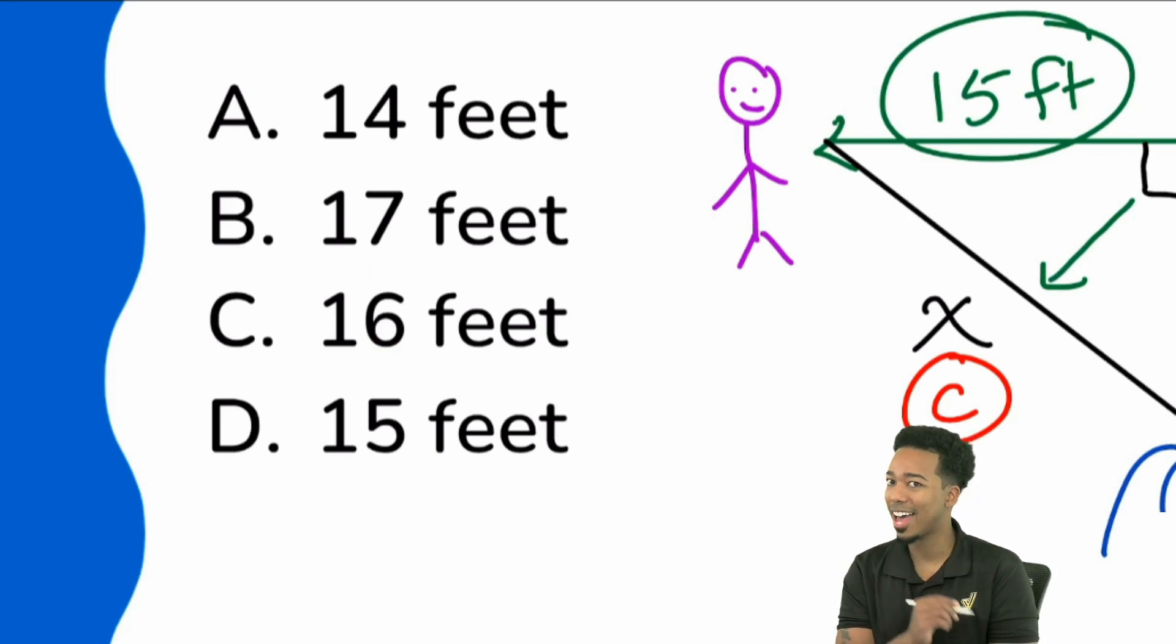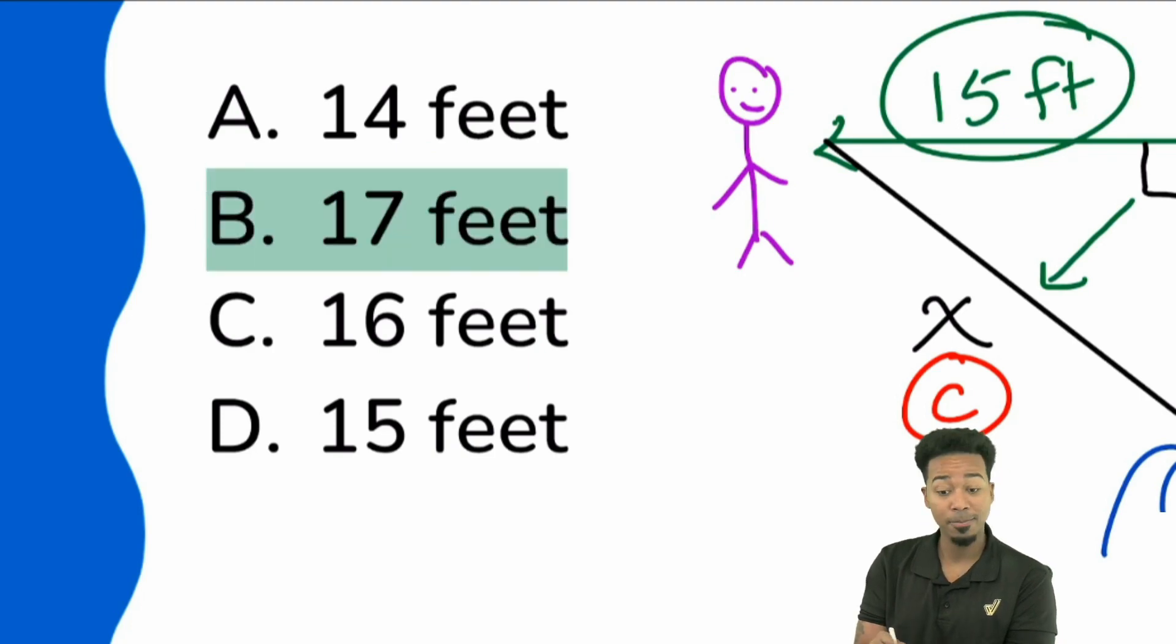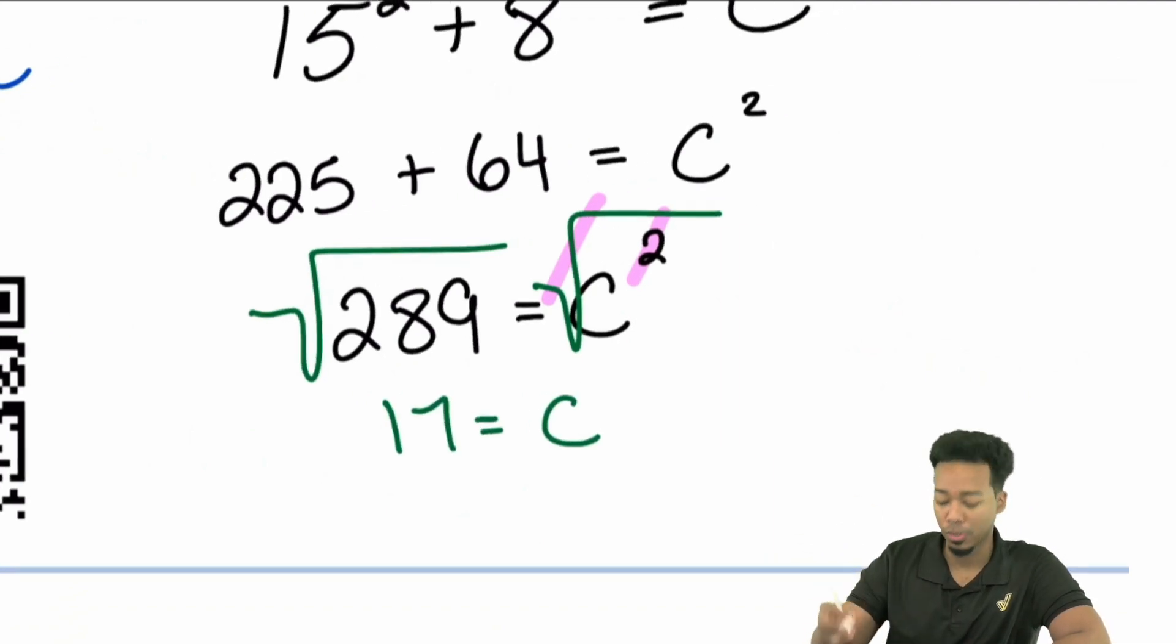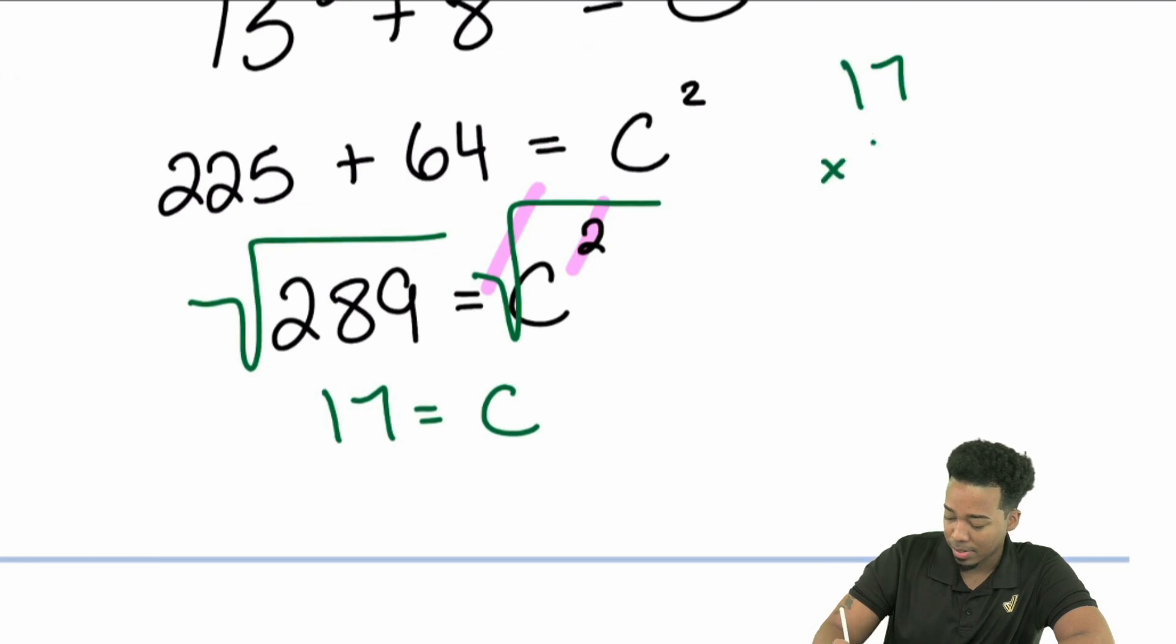What about six times six? That ends in a six, 36. Seven times seven does end in a nine because seven times seven is 49. Because four times four is 16, that ends in a six. So I don't have to actually do the math here. I know that the answer is going to be 17, and I'm good.